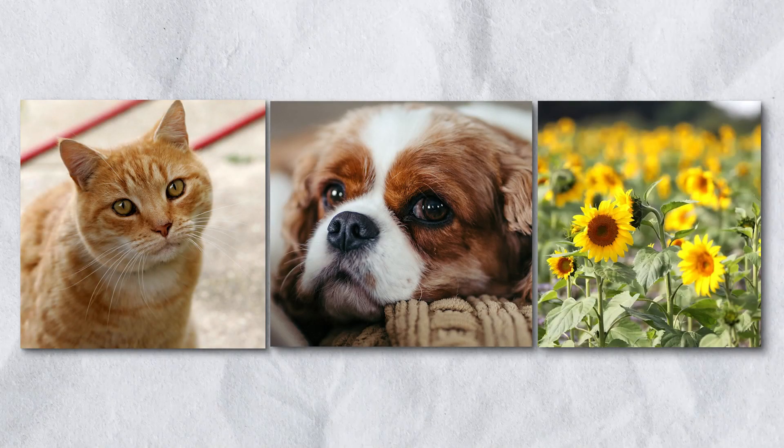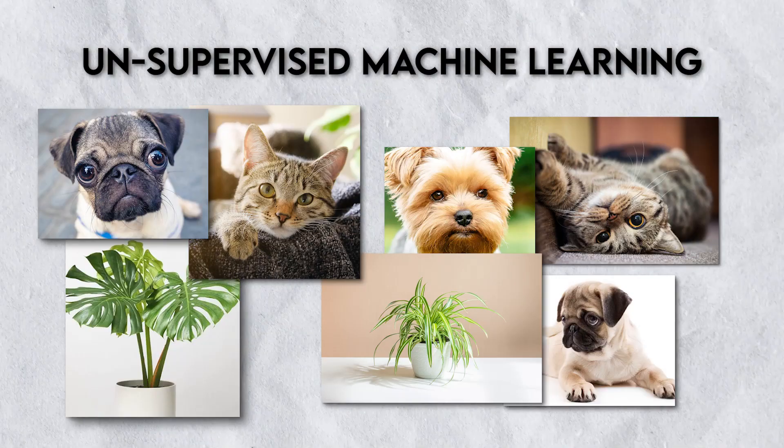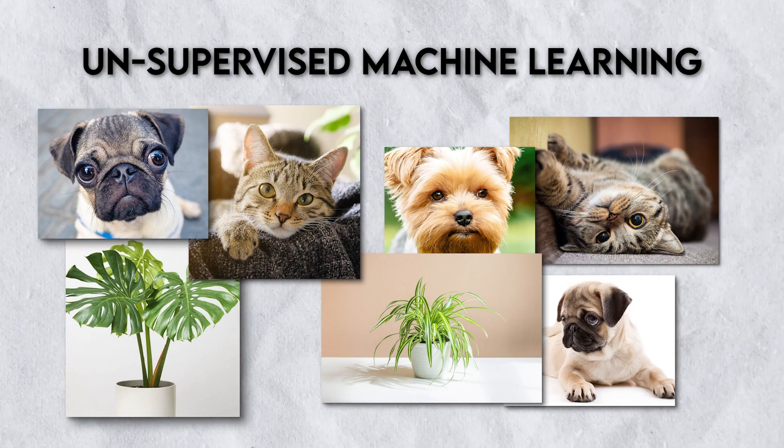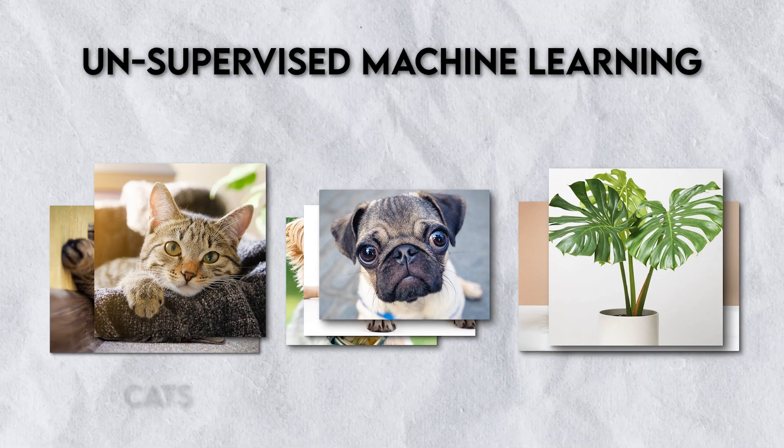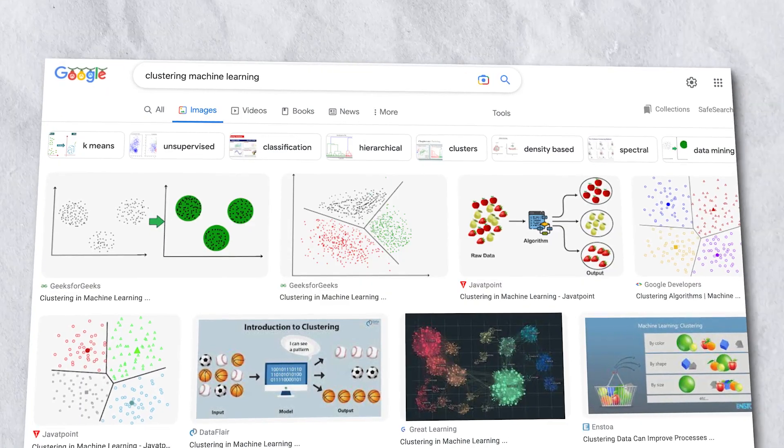The second type is unsupervised machine learning. It still requires datasets, but they don't have to be labeled. There's a type of algorithm called clustering — algorithms like k-means clustering or nearest neighbor clustering — that can group unlabeled images into similar clusters, such as cats, dogs, and plants, based on their similarities. Semi-supervised learning is a popular variation where you have a combination of labeled and unlabeled data used together for this type of clustering.